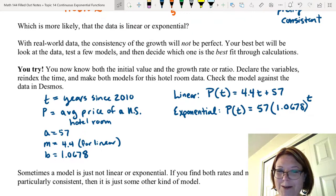Just one warning about these models. Not all models are linear or exponential. If you find both rates, the average rate of change and the growth ratio, and neither is particularly consistent for the data, then it's probably just some other kind of model. We had quadratic models, square root models. There are other things you can look for.